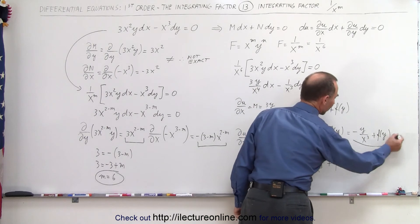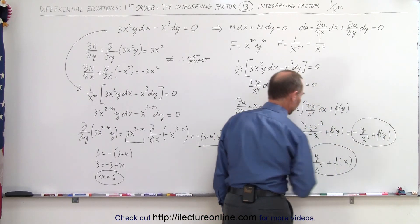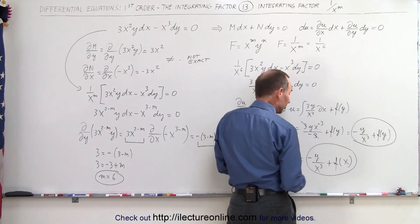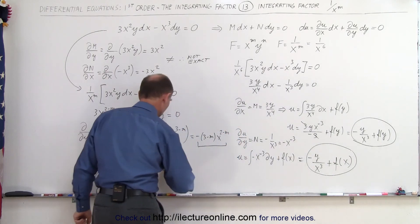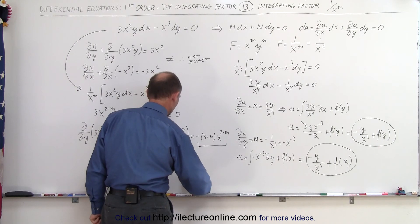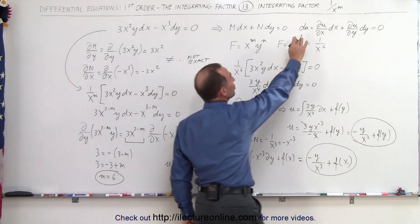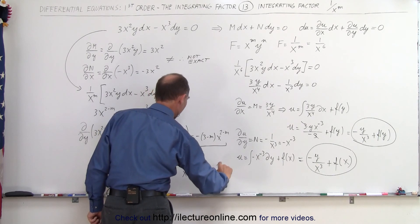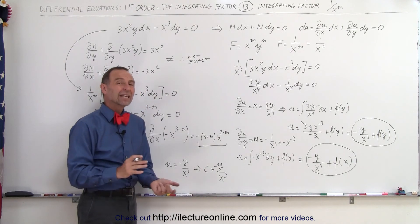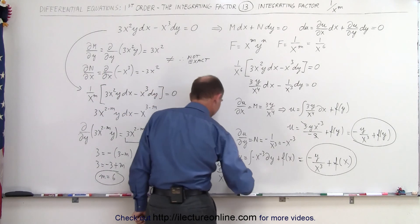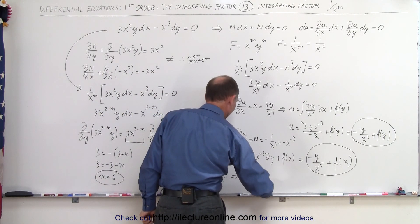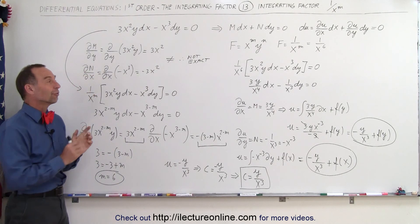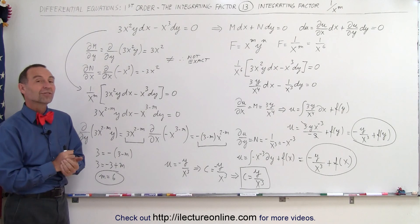Now comparing both results: from the first we have u equals minus y over x cubed plus g(y), and from the second u equals minus y over x cubed plus h(x). Since they must be equal, the function of y and the function of x must both be constants. Therefore u equals minus y over x cubed. Since du equals 0, u equals a constant, so the constant equals y over x cubed — dropping the negative since constants can be any sign. This is the same solution as the previous video, just using a different integrating factor: 1 over x to the 6 instead of 1 over y squared.